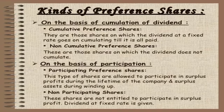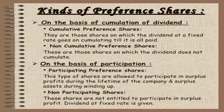On the basis of accumulation of dividend: first, cumulative preference shares are those shares on which the dividend at a fixed rate goes on cumulating till it is all paid. Non-cumulative preference shares are those shares on which the dividend does not cumulate. On the basis of participation: participating preference shares are allowed to participate in surplus profit during the lifetime of the company and surplus assets during winding up.